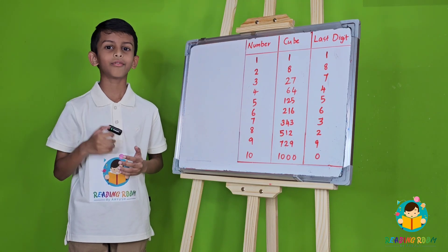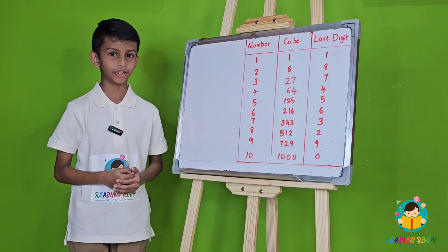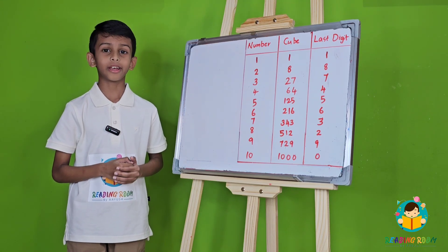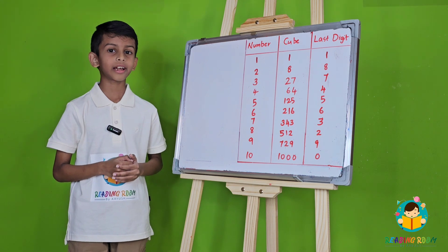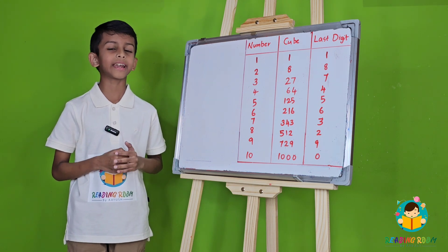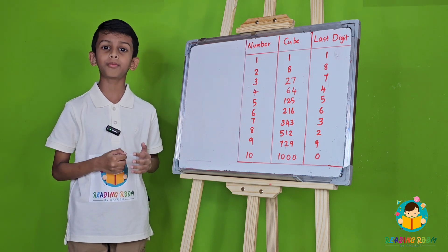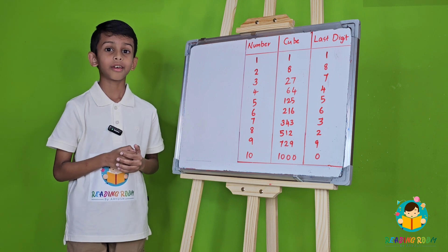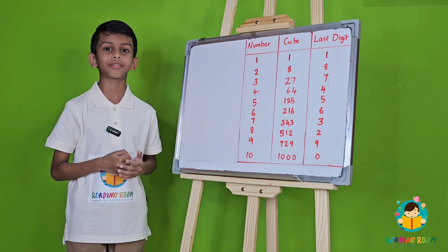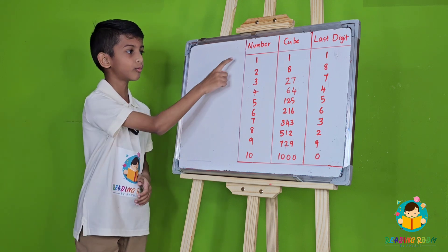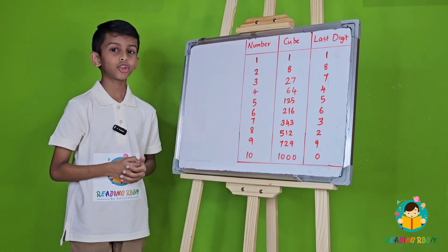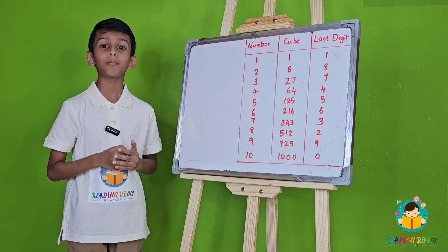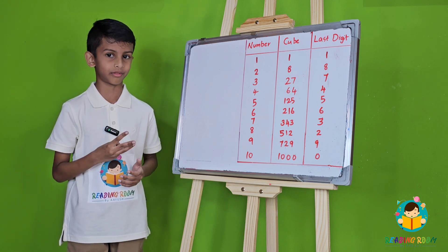Hello everyone, welcome to my reading room. My name is Ayesh. Today we are learning a simple and easy method to solve cube roots of perfect cubes. First, we have to memorize the cubes from 1 to 10. Cubes are nothing but the number multiplied by itself three times.